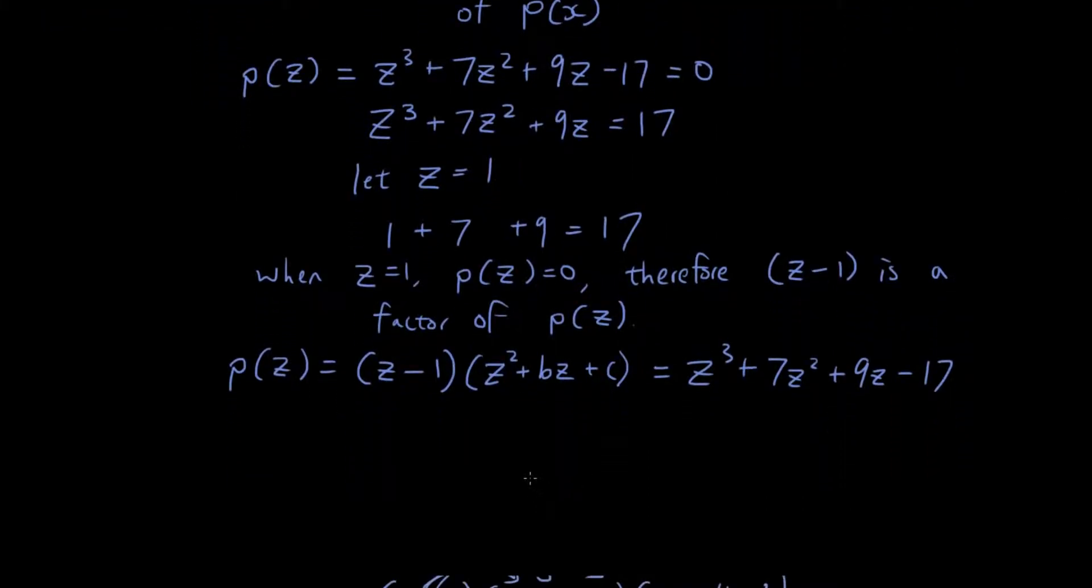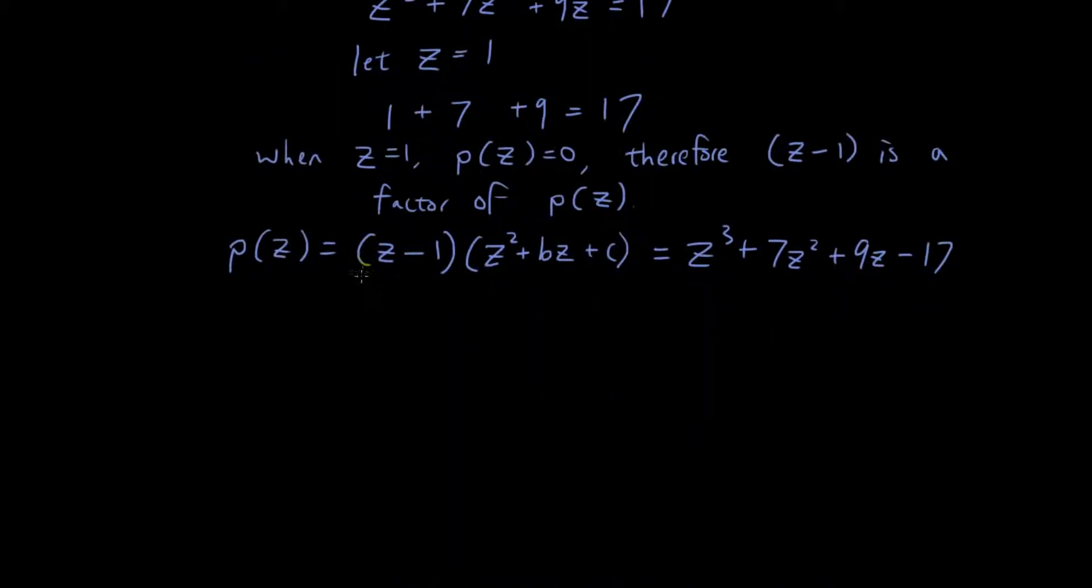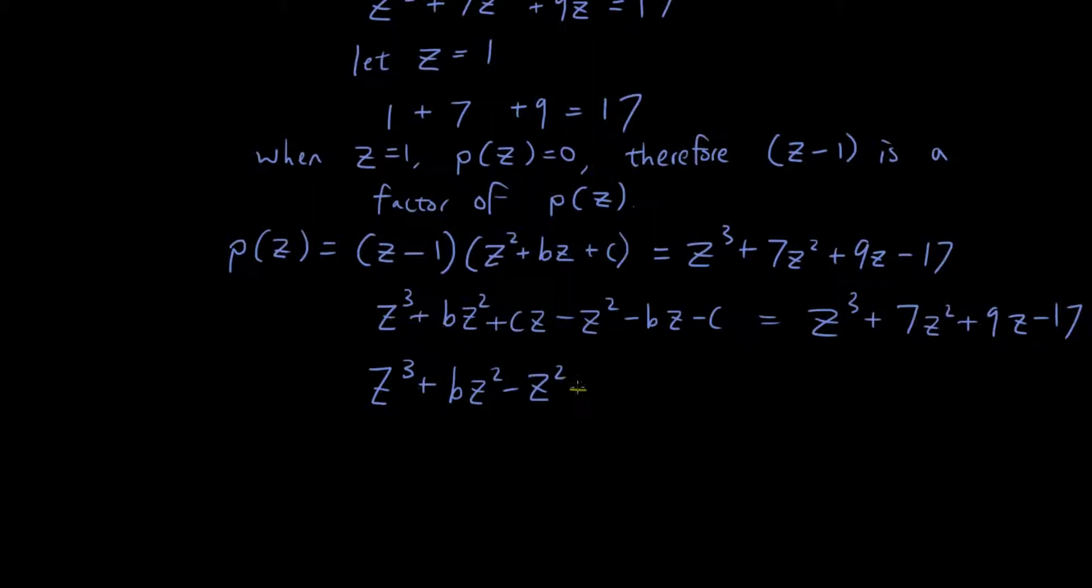So now we're going to try and make the left hand side equal to the right hand side so we can see what b and c are. So if I expand this out, I will get z³ + bz² + cz - z² - bz - c. That's the left hand side. And on the right hand side, I have z³ + 7z² + 9z - 17. And if I simplify the left hand side, I will get z³ + bz² - z² + cz - bz - c. I just reordered them.